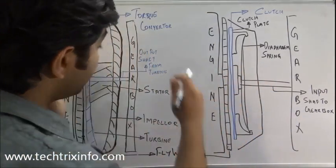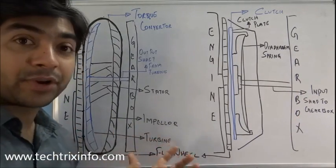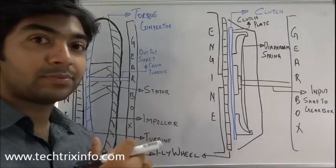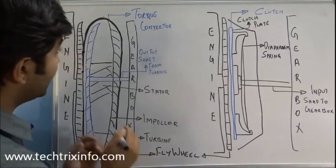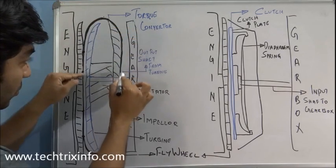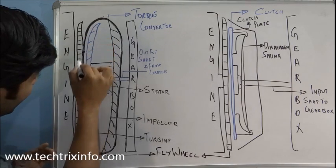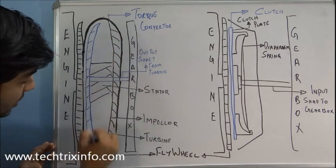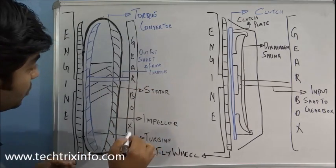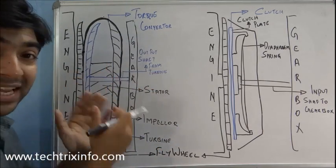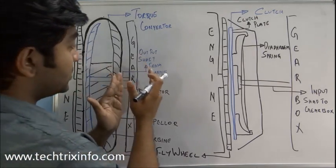I have drawn figures of both the clutch and the torque converter. Let's have a briefing about how both systems work and how they differ. This is our torque converter unit. Here we have the engine, this is our flywheel, and the torque converter is mounted towards the flywheel. This is the gearbox.